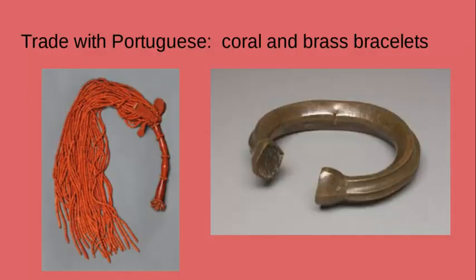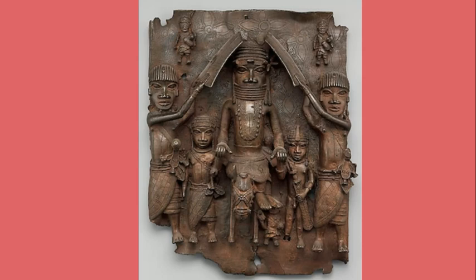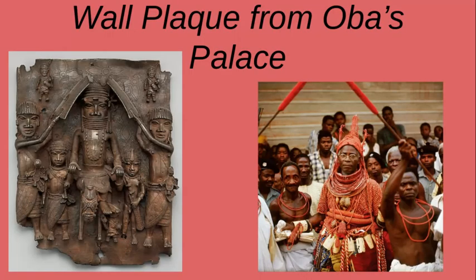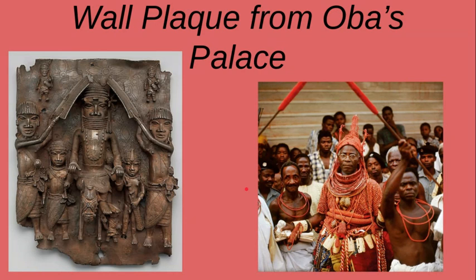Some of those plaques are now located in various museums around the world. Trade with the Portuguese is important because that's where they got the materials. One formal quality worth noting is proportion — the Oba's head is quite large because he is the center of wisdom and great power. The ancestors communicate through him, so in this art piece he is depicted as the most powerful. You can also see the beautiful red coral beads the Benin Oba is wearing to signify power — it becomes the hallmark of the power they display.